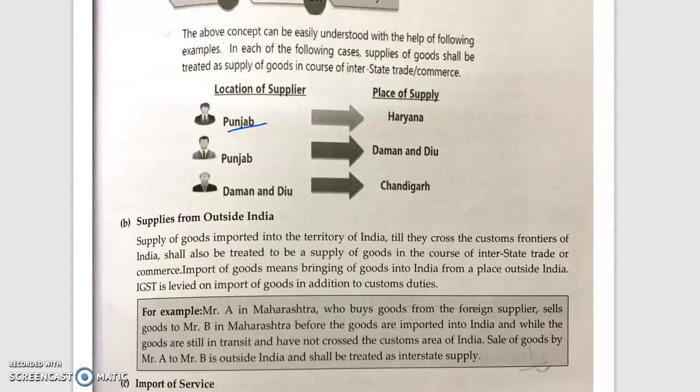Goods imported into the territory of India, until they cross the customs frontier of India, shall also be treated as a supply of goods. This means that if you are importing foreign goods, you have to pay import duty IGST, and then customs duty, and then move the goods to a bonded warehouse. When goods have not yet crossed the customs frontier, we consider it interstate trade.